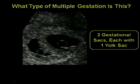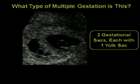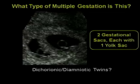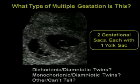Before we go any further, I'll pose a little problem case, and the answer will come up in a few minutes. This is a transvaginal close-up view of a multiple gestation at about five and a half weeks. The question is: what type of multiple gestation is it? You can see two gestational sacs, each with one yolk sac. Are these dichorionic-diamniotic twins, monochorionic-diamniotic twins, or something else — or you just can't tell? Keep this in mind; we'll see the answer very shortly.